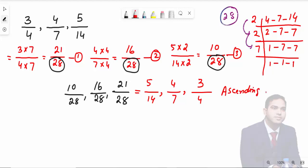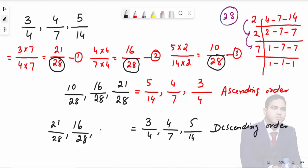Now for descending order, you need to reverse this. So it becomes 3 over 4, then 4 over 7, then 5 over 14. This is descending order. You can see 21 over 28, 16 over 28, 10 over 28, from highest to lowest. 21 comes from 3 over 4, 16 comes from 4 over 7, and 10 comes from 5 over 14.